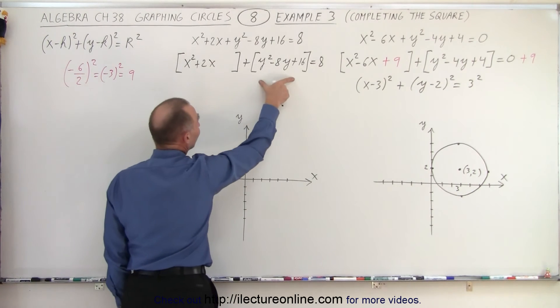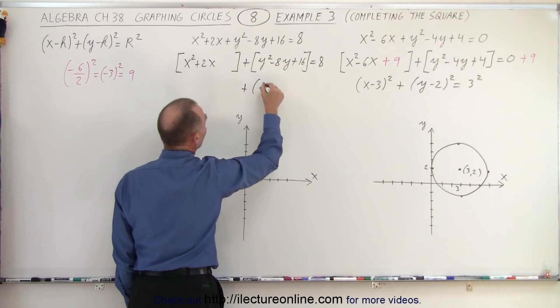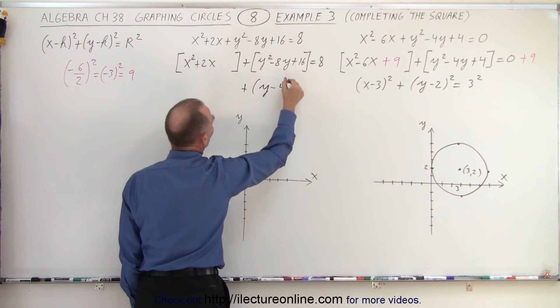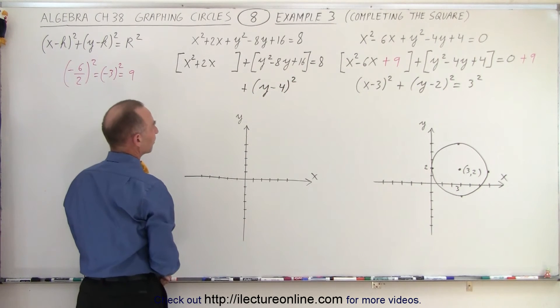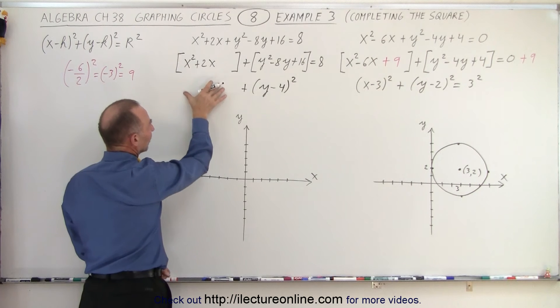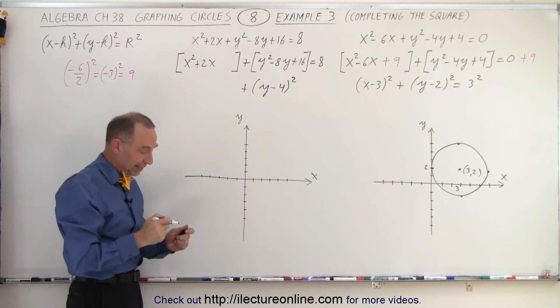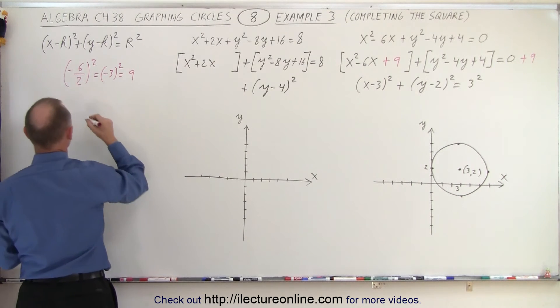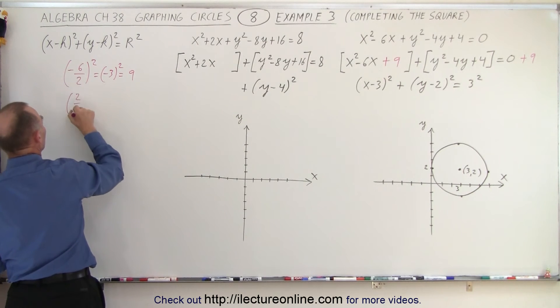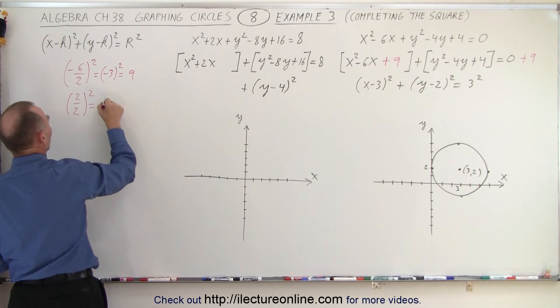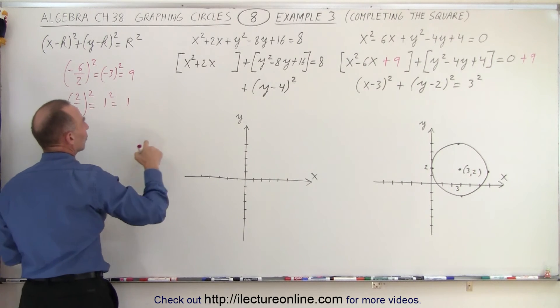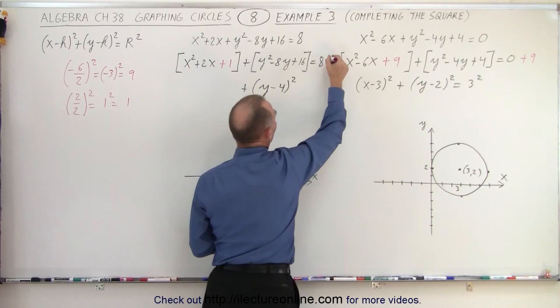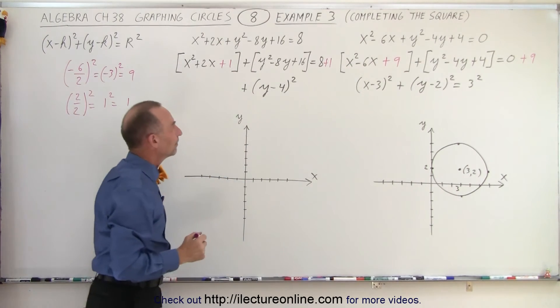Again, we can write this as the quantity y minus 4 quantity squared. But how do we write this? Well, we need something there. And again, to find that, we'll use a different color. We take the middle term, the coefficient of the middle term, divided by 2 and squared, which is 1 squared, which is equal to 1. So, we need to add 1 here. And of course, we need to add 1 to the right side.